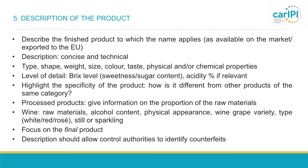It is very important to highlight the specificity of the product — how this particular product is different from other products of the same category. This is also an important element for the section on the link. As regards processed products such as sausages, there should also be information on the proportion of raw materials. Please always focus on the final product, because these product descriptions should allow control authorities to identify counterfeits or products that do not comply with the product specification.